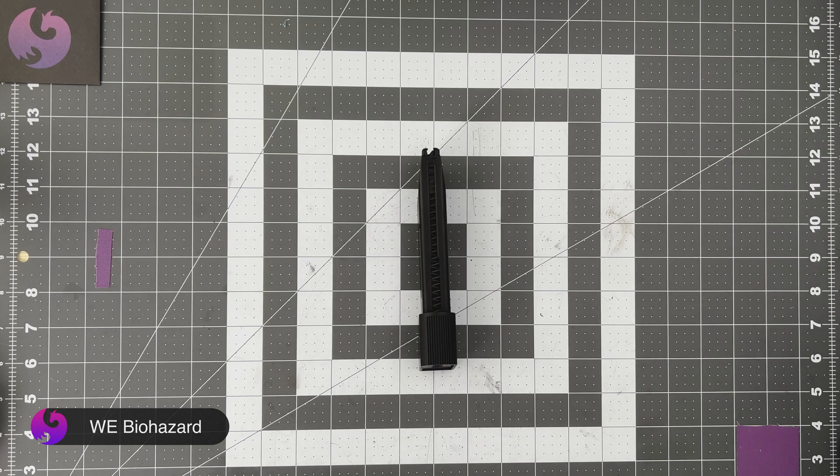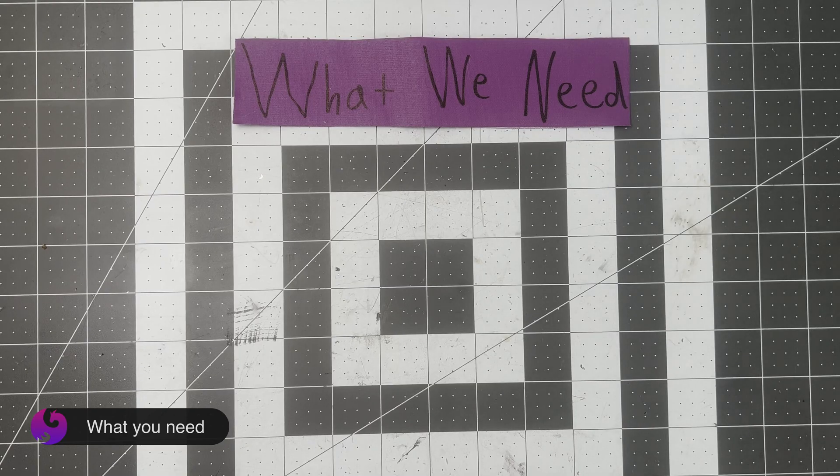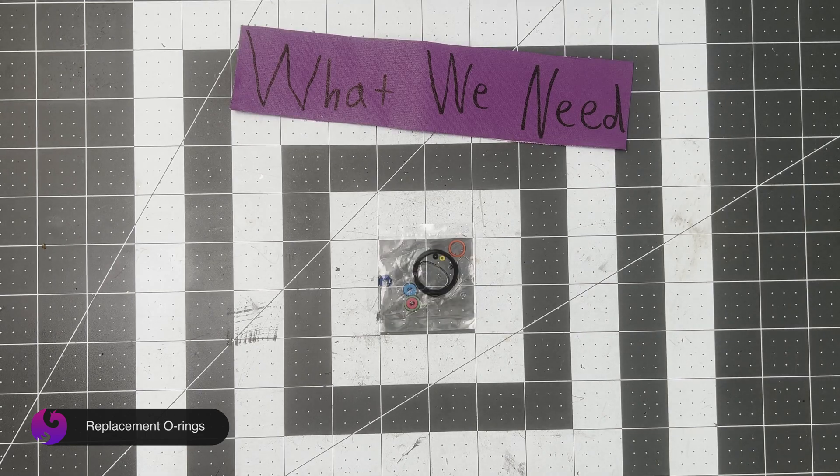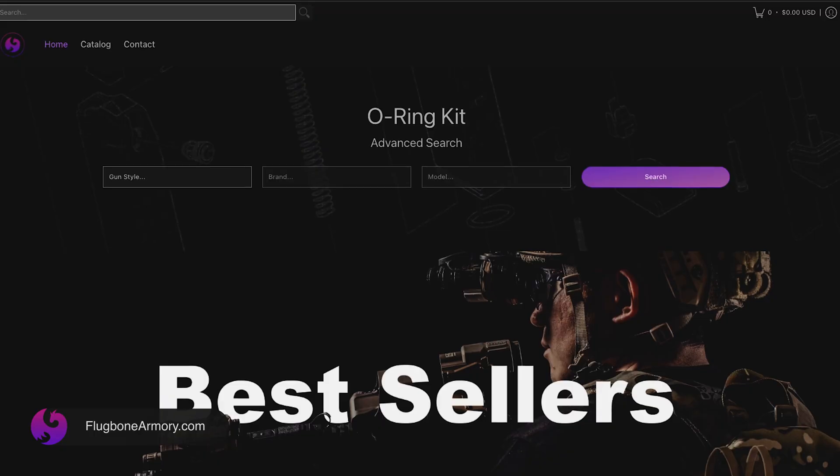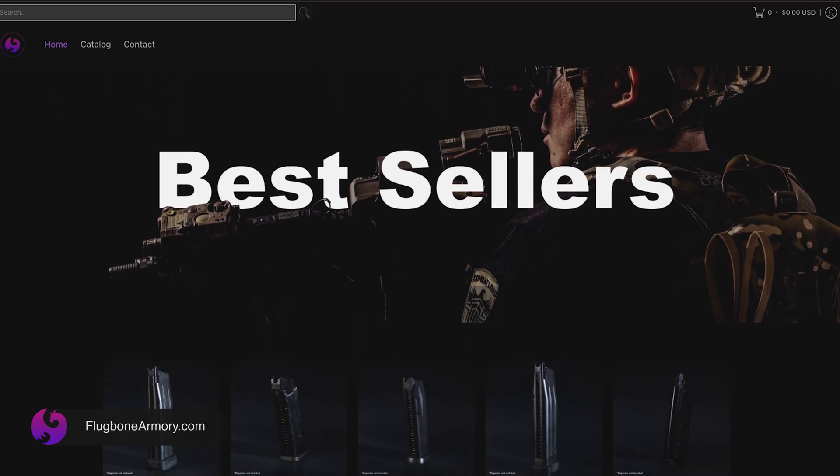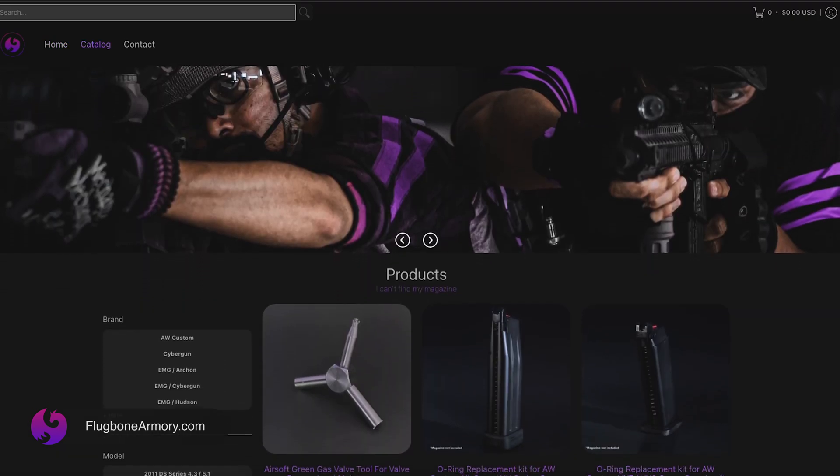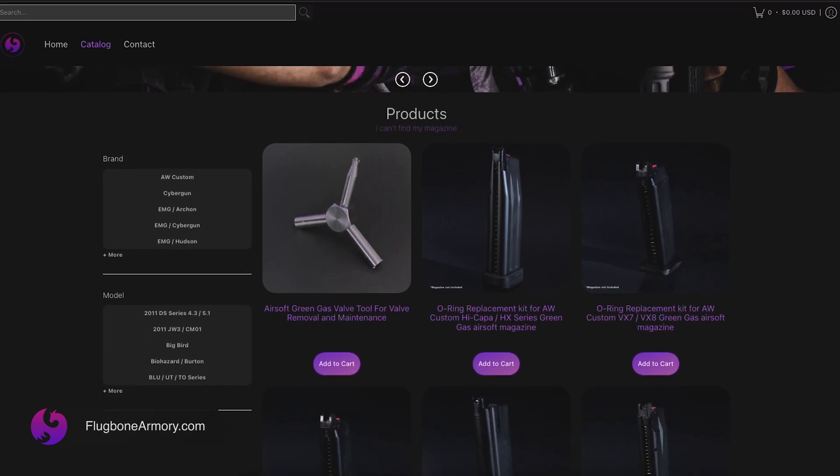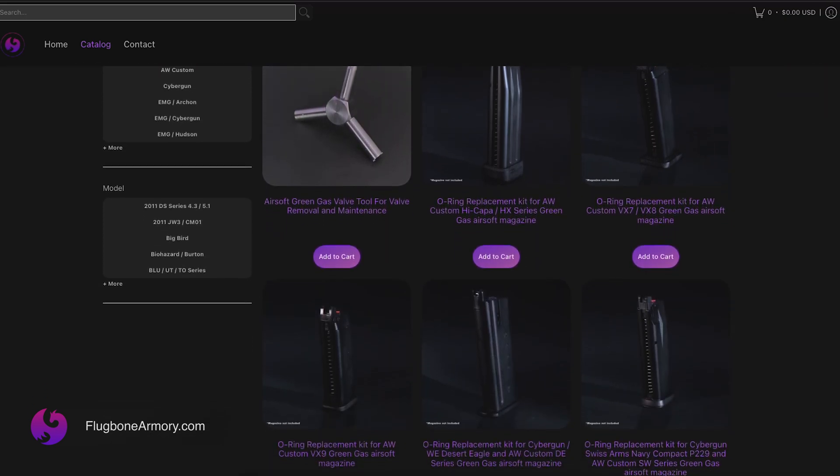Before we get started, let's make sure we have everything. In addition to our magazine, we will need replacement O-rings. You can get these at pluguebonearmory.com with free shipping. Each pack can replace all the O-rings in one magazine. If you buy three, you get one free. Just look up your magazine brand in our search and find the one that matches.